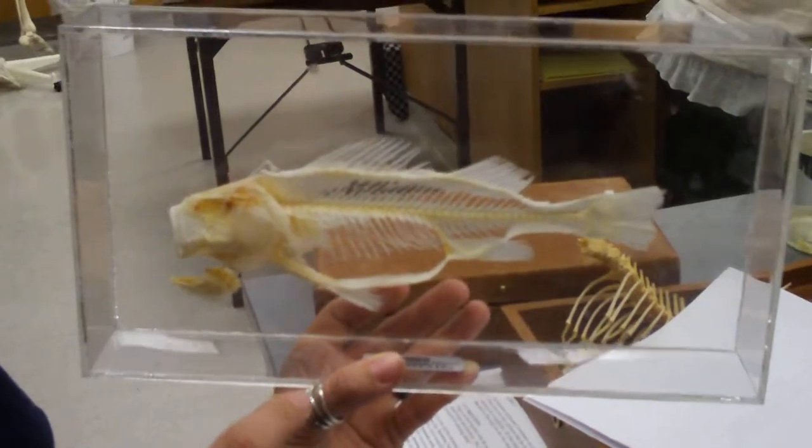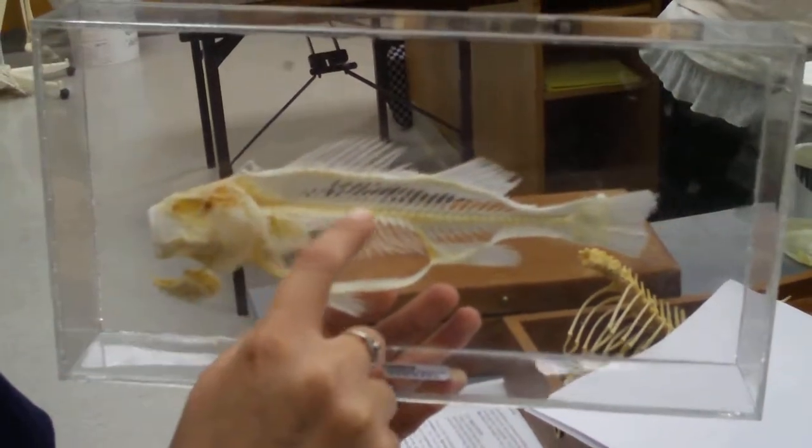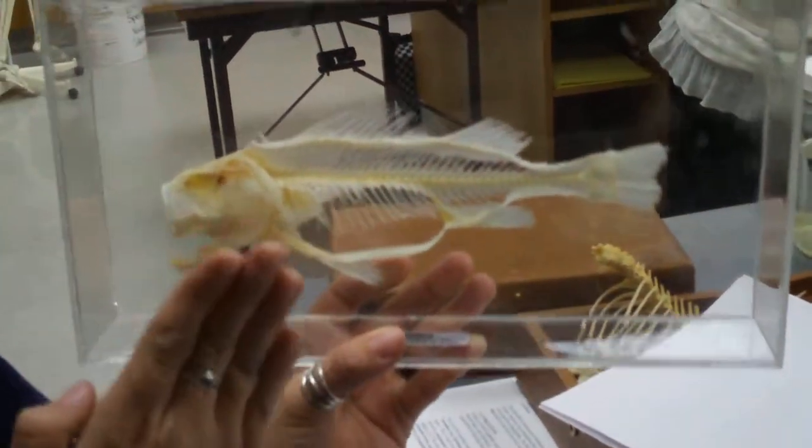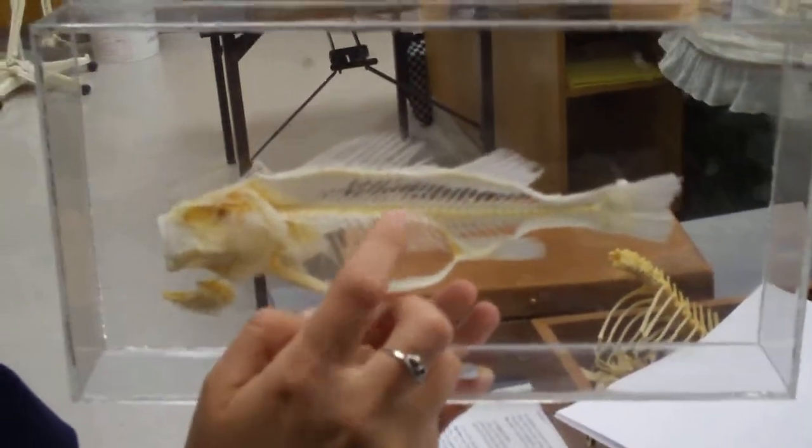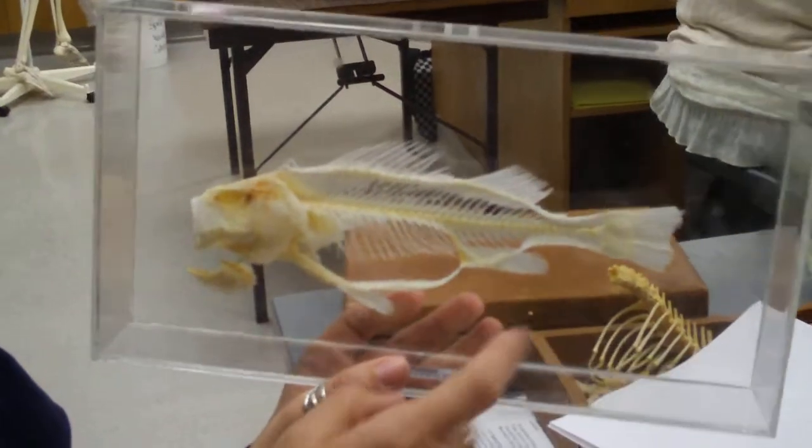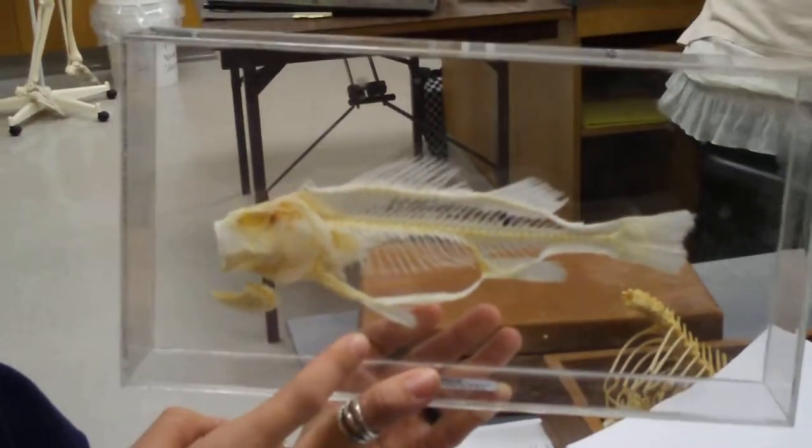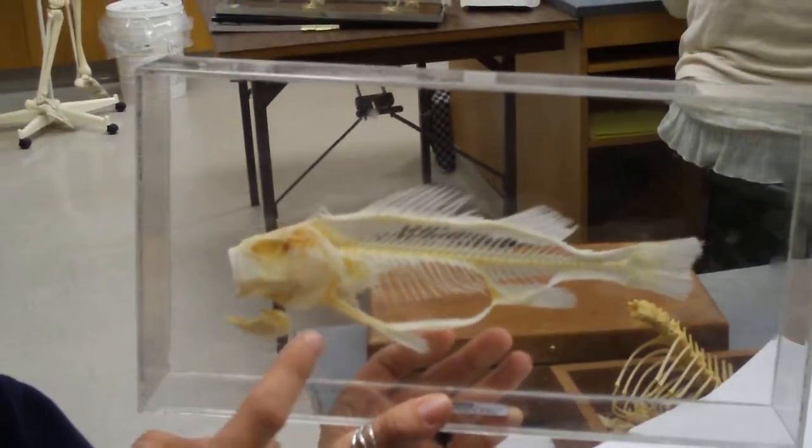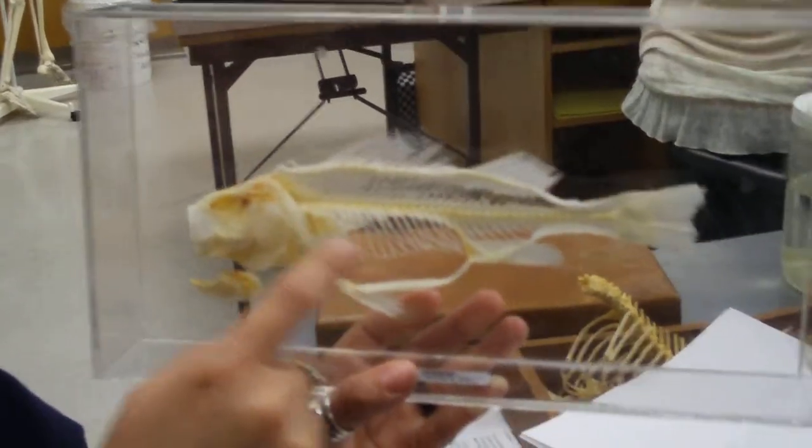Okay, then running all the way down the back right here, you can see the bones that are sticking up off of the vertebral column. Those are your neural spines. That's the caudal fin, anal fin back here, pelvic fin, pectoral fin.